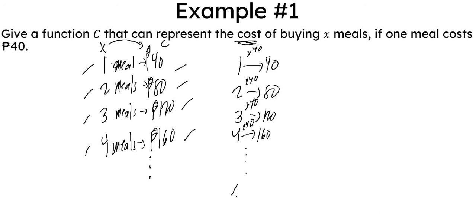So that means if I have x number of meals, then I will multiply it to 40. Then, the equation that I will get here, or the expression rather, would be 40 times x, which is the number of meals.